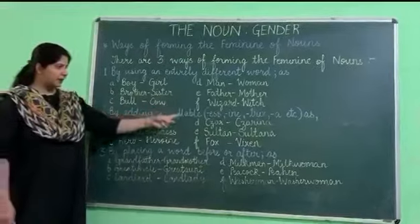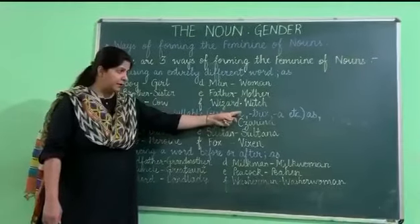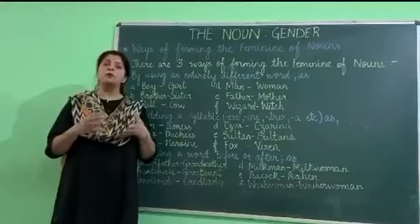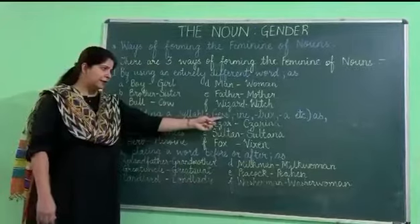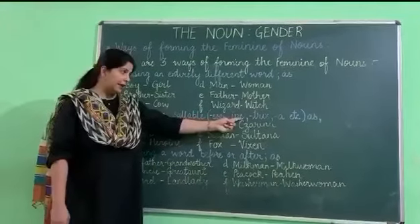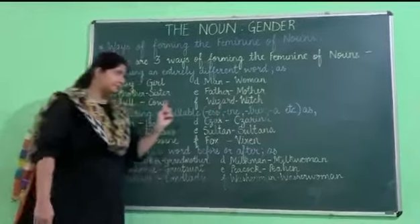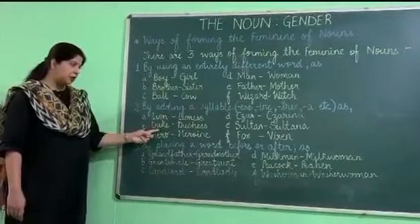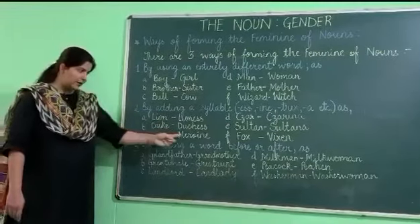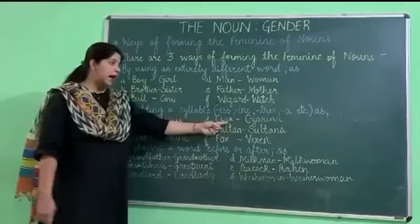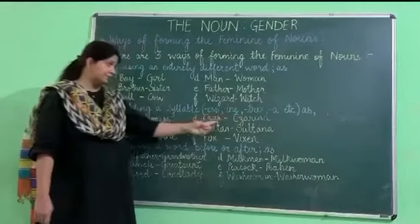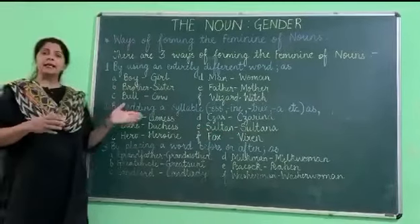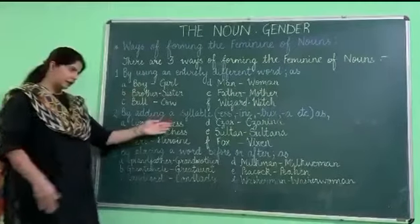Number two: by adding a syllable — such as -ess, -ine, -trix, -a, etc. A syllable is a word or part of a word which has a vowel sound in it. For example: Lion becomes Lioness — you have added -ess. Duke becomes Duchess. Hero becomes Heroine — you have added -ine. Zar becomes Zarina — you have added -ina. Sultan becomes Sultana. Fox becomes Vixen. By adding a syllable, you have made the feminine of these words.